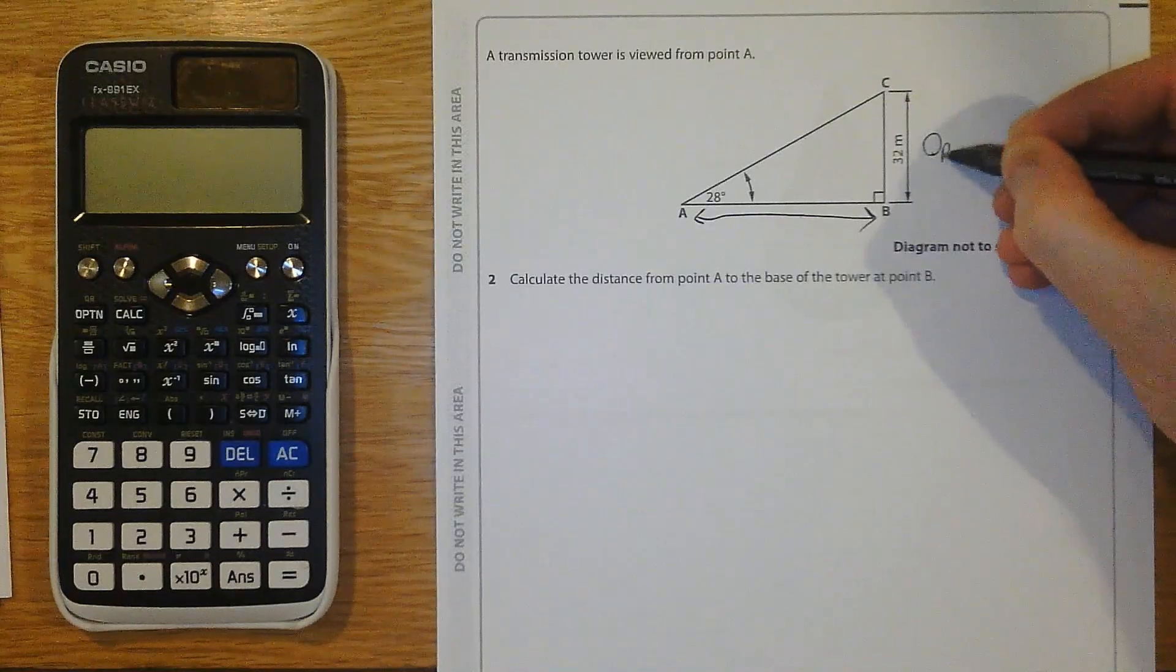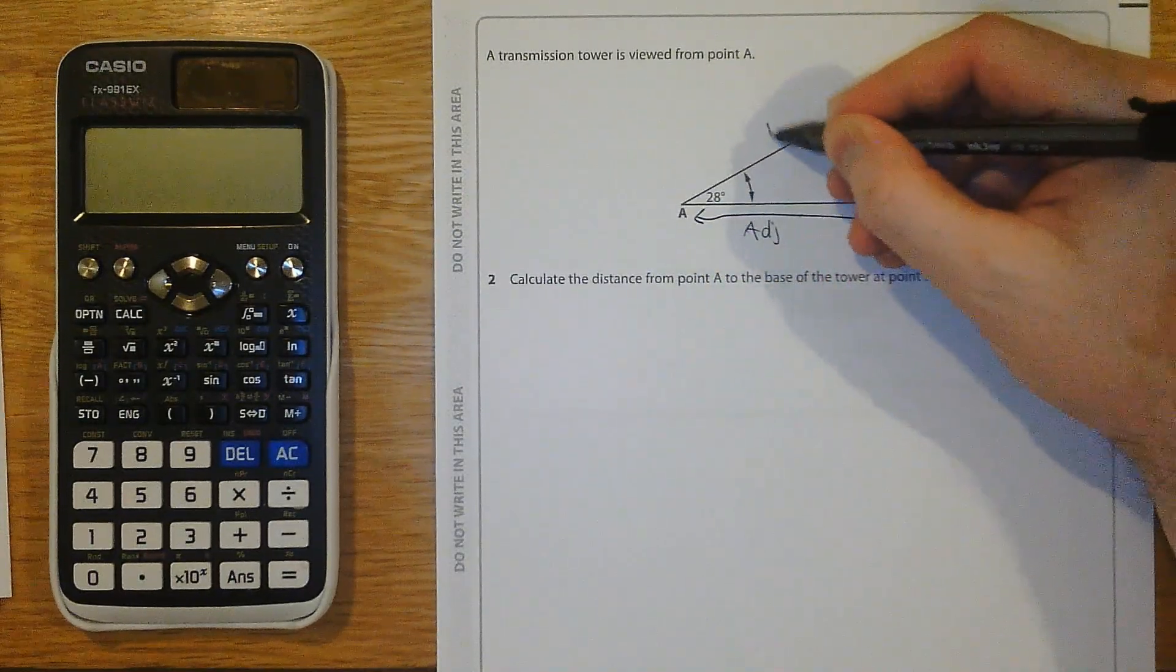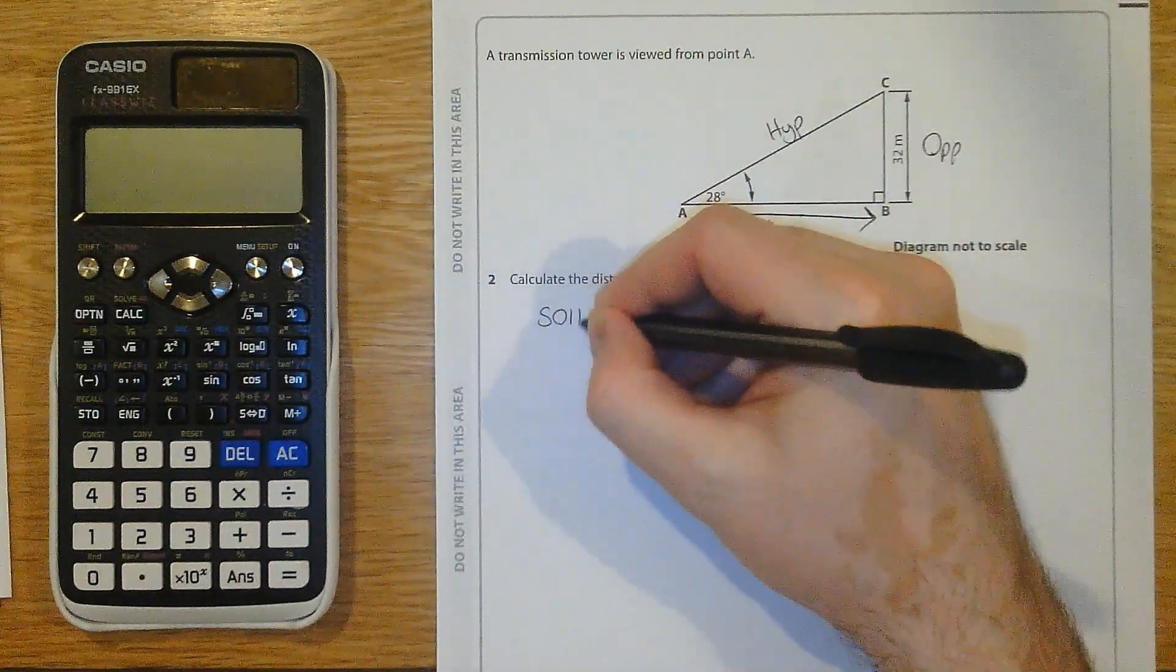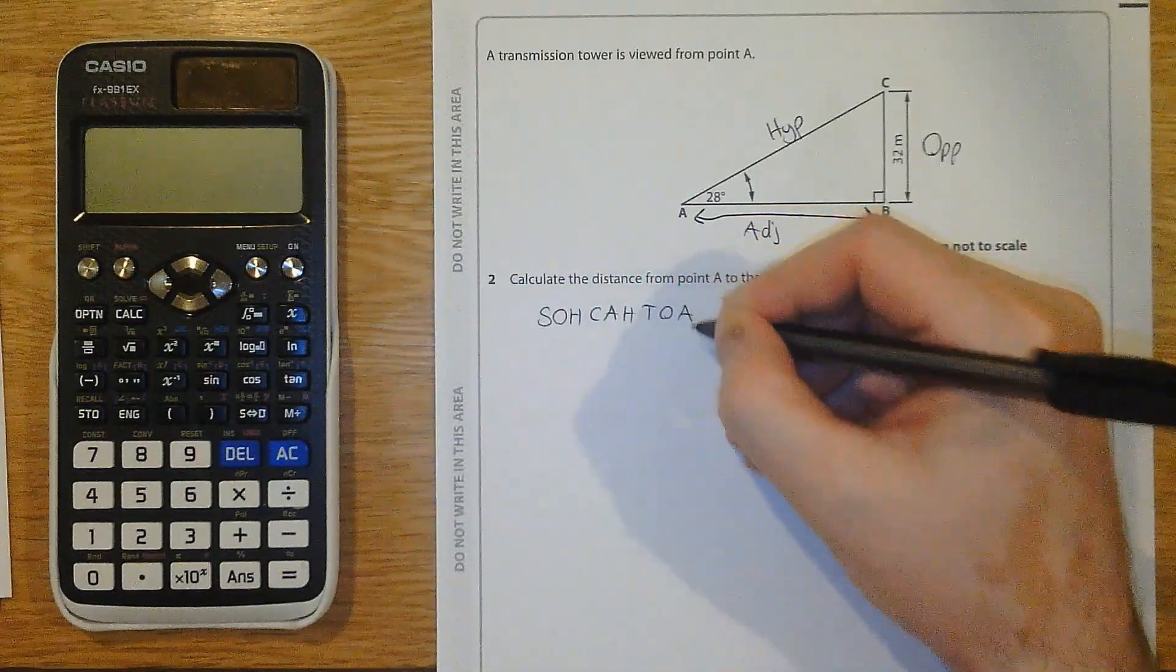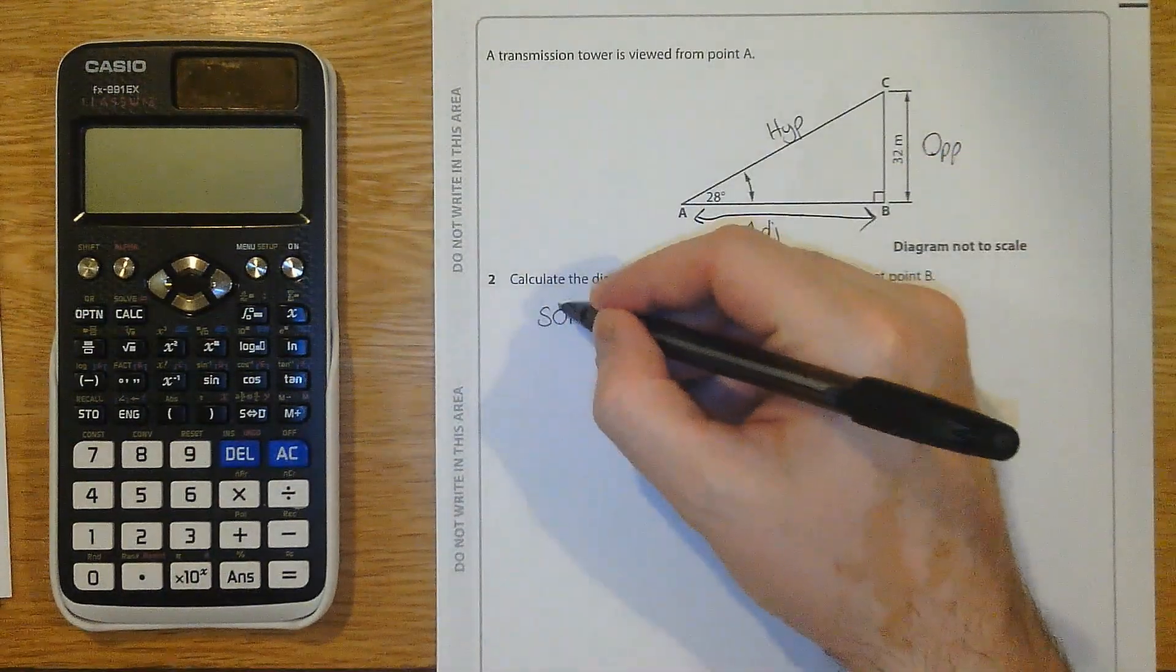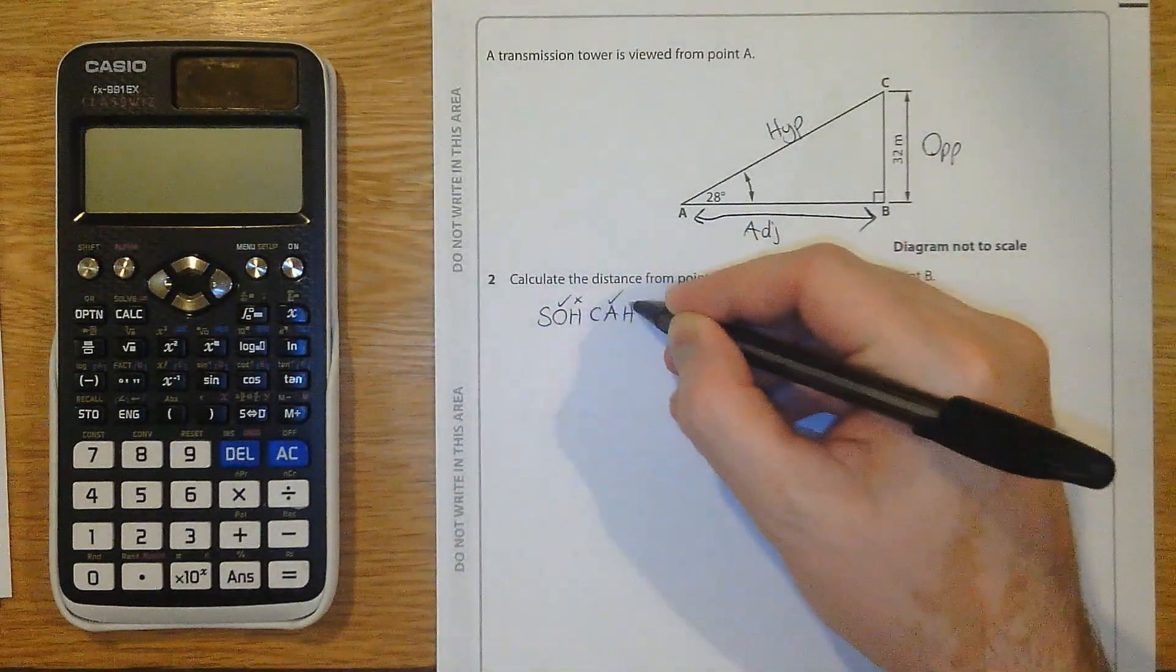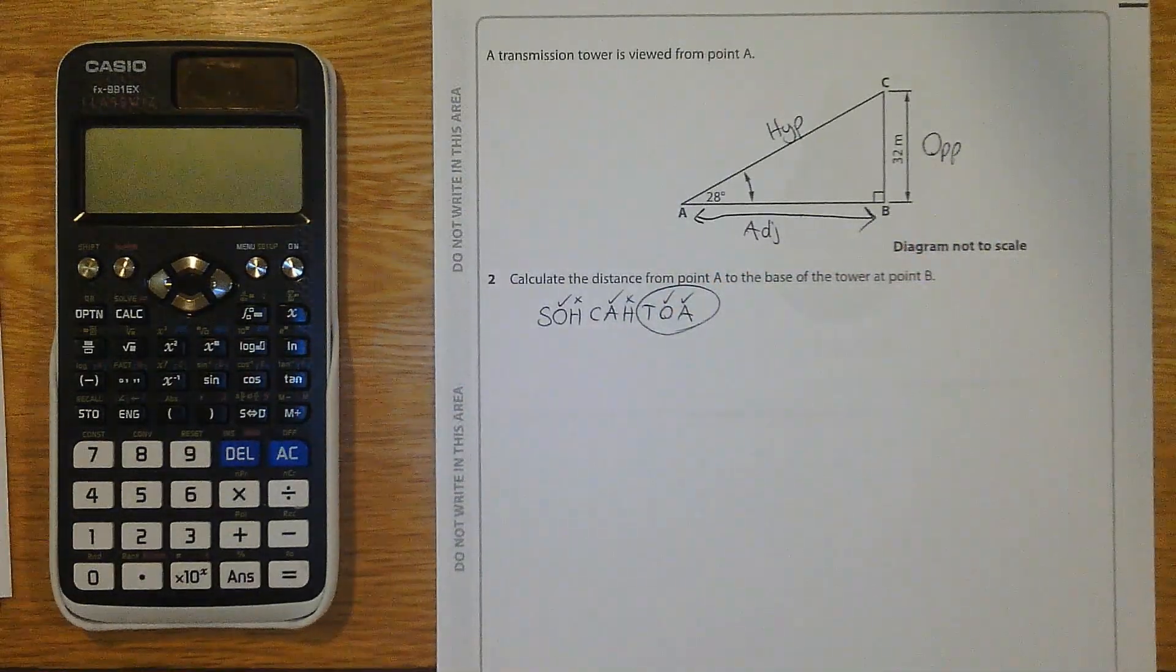This is the opposite. This is the adjacent. And this is the hypotenuse. The opposite, yes, I've got that. The hypotenuse, no. The adjacent, yes. The hypotenuse, no. The opposite and the adjacent. I want tan of the angle.